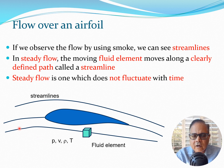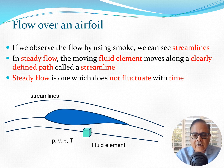If we now take a point on the streamline, we are going to have an element of fluid there, and this element is going to have certain values associated with it. These are going to be P, V, rho, and T, which we have learned in our previous class as the flow field — that is the pressure, the velocity, the density, and the temperature at this point.